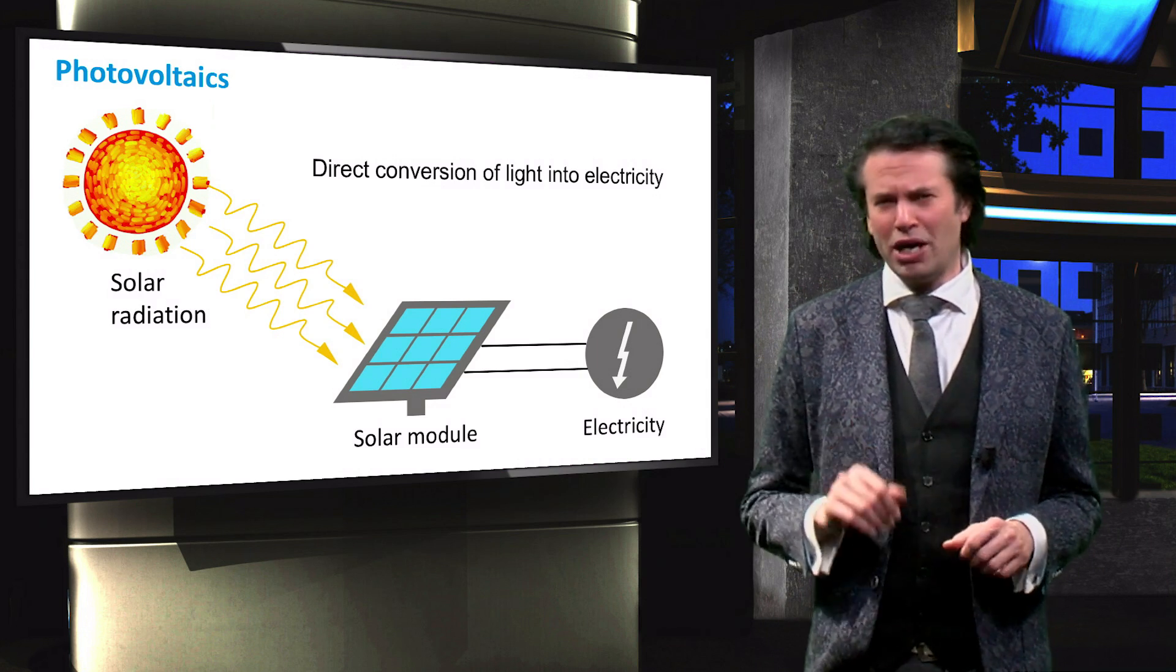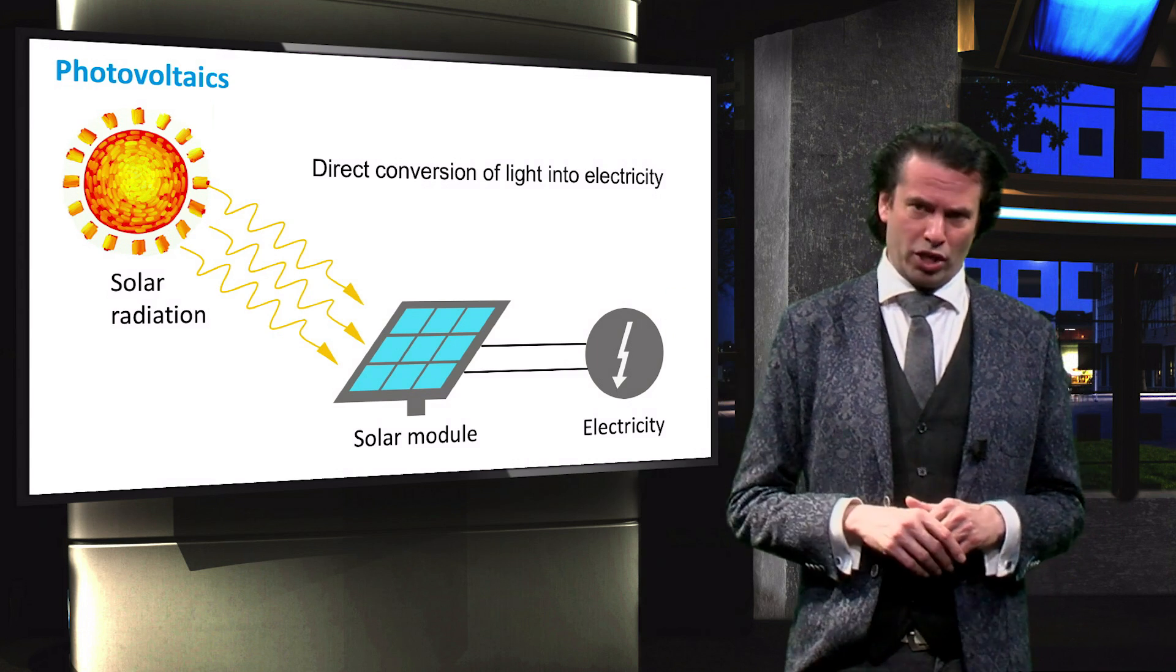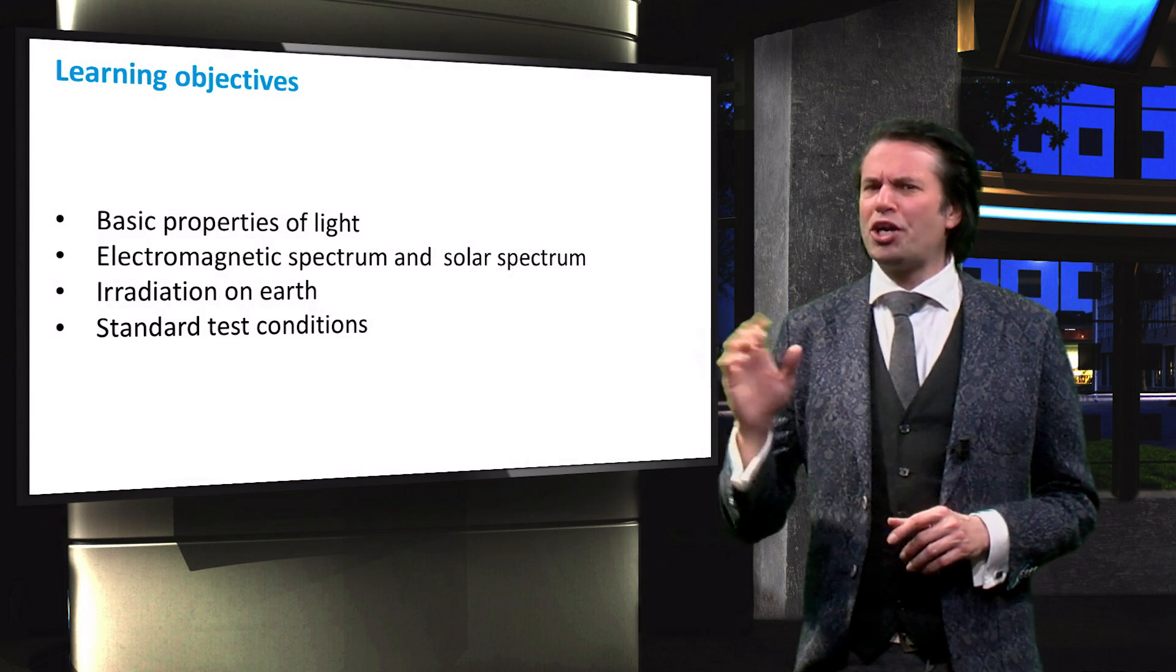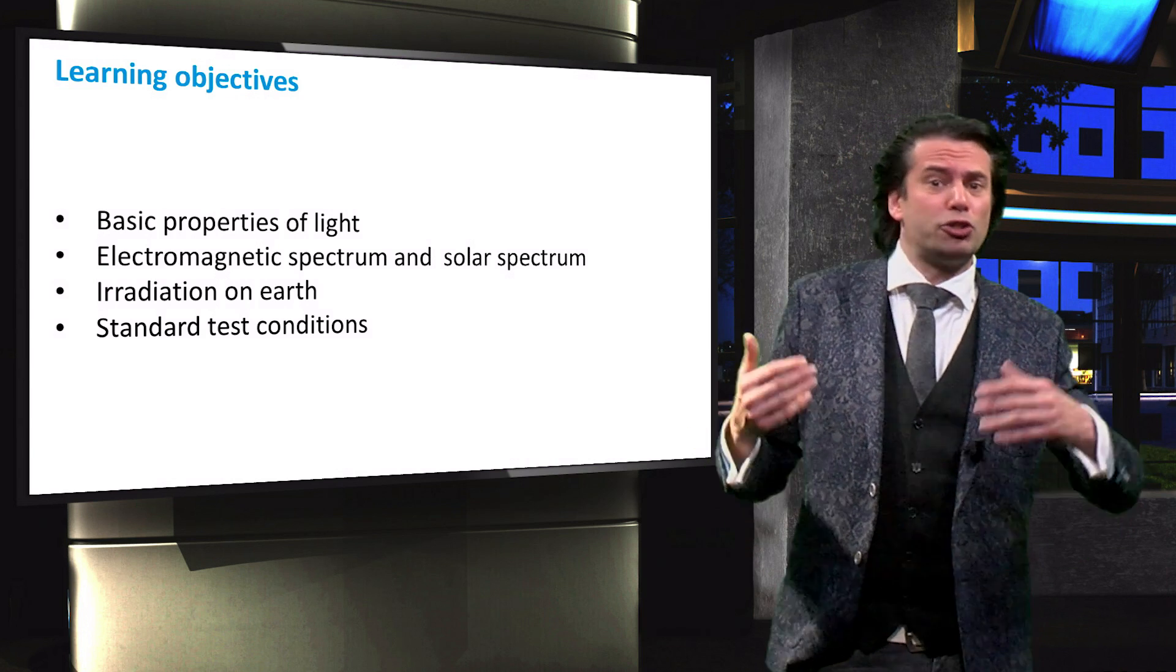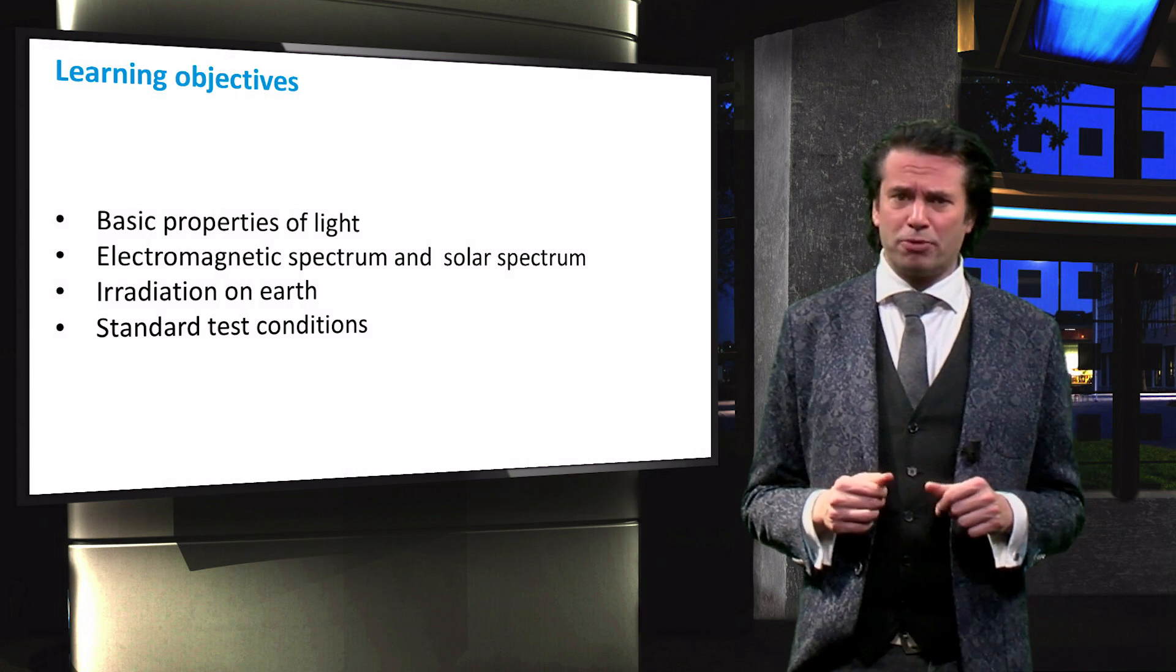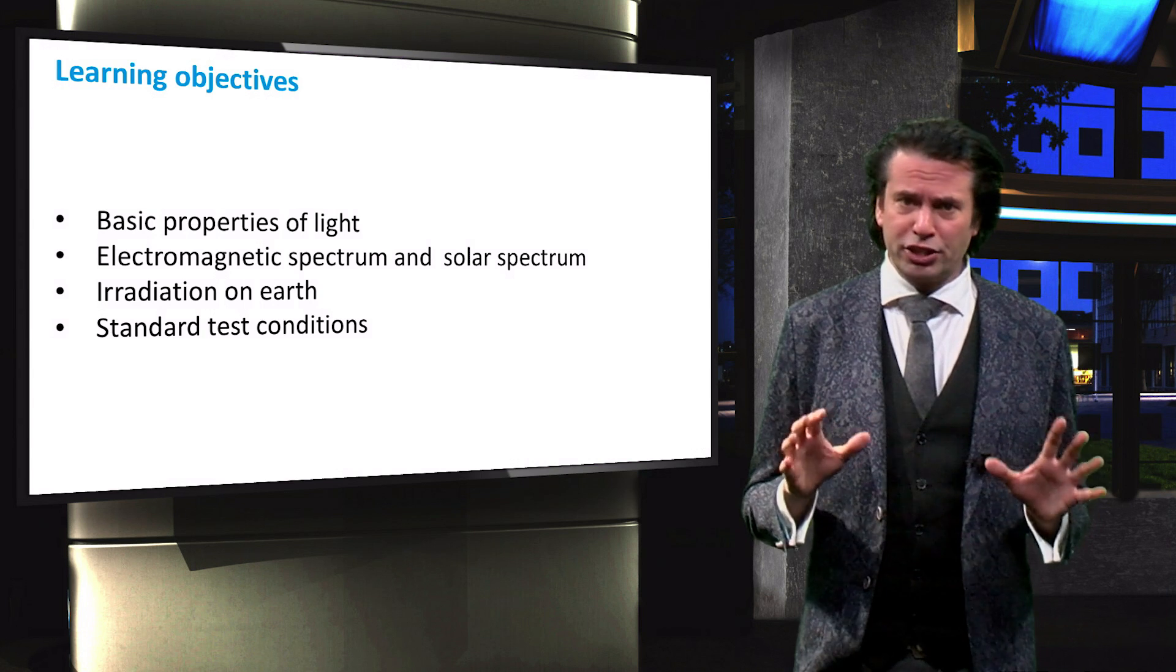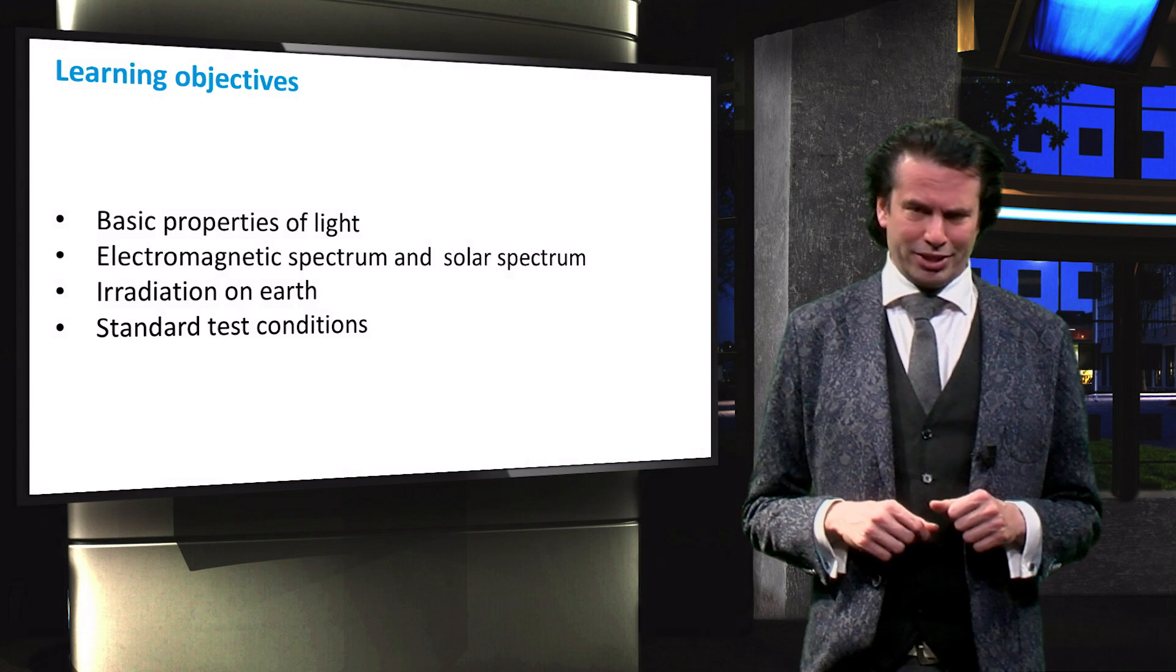In this video we will focus on some important properties of light and on solar radiation. We will learn about the basic properties of light, discuss the spectrum of electromagnetic radiation and the radiation spectrum of our sun, then consider the irradiation on the surface of the earth, and finally discuss the standard test conditions.